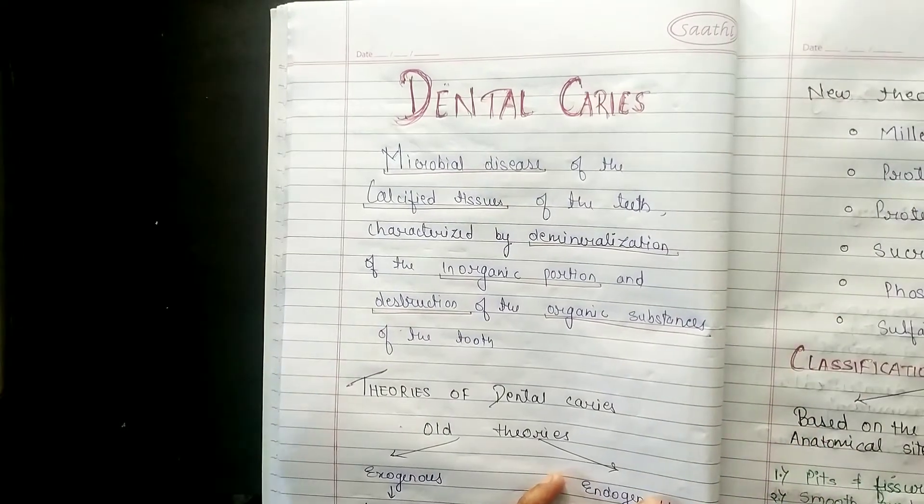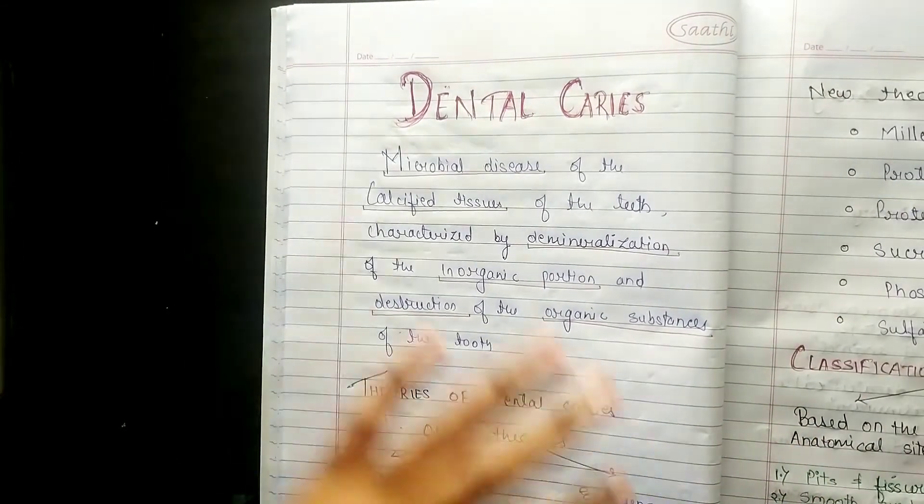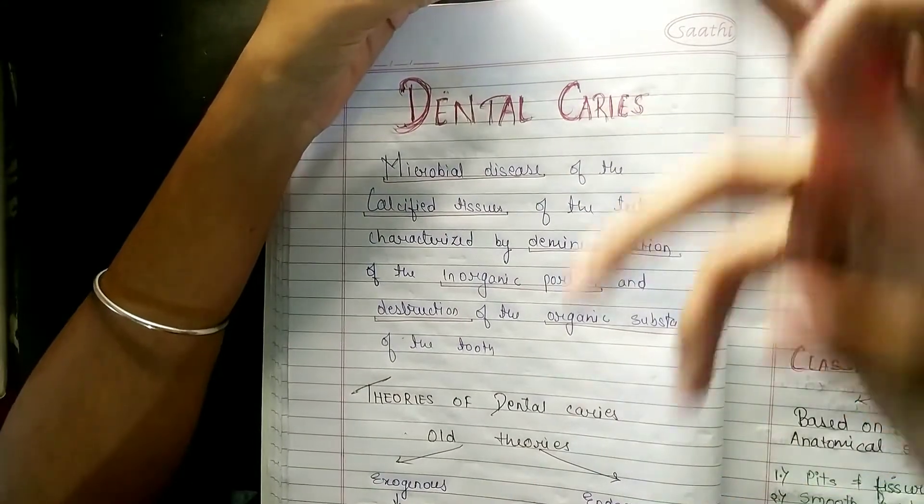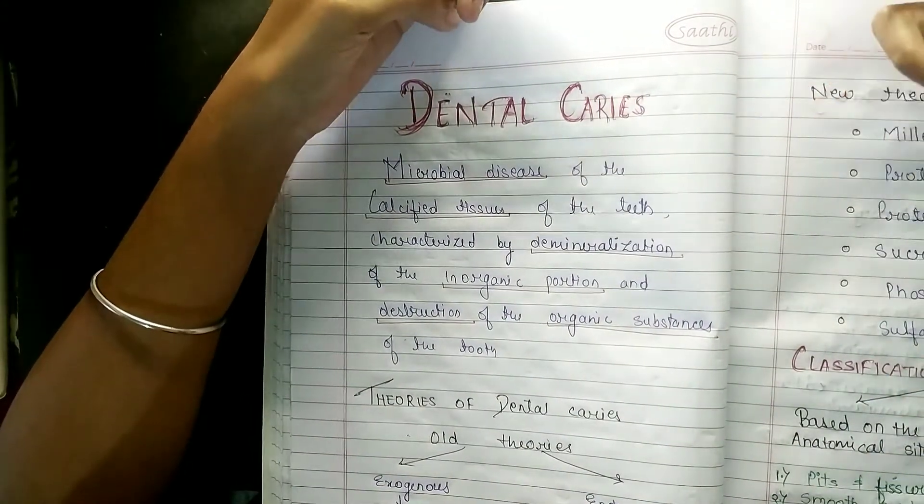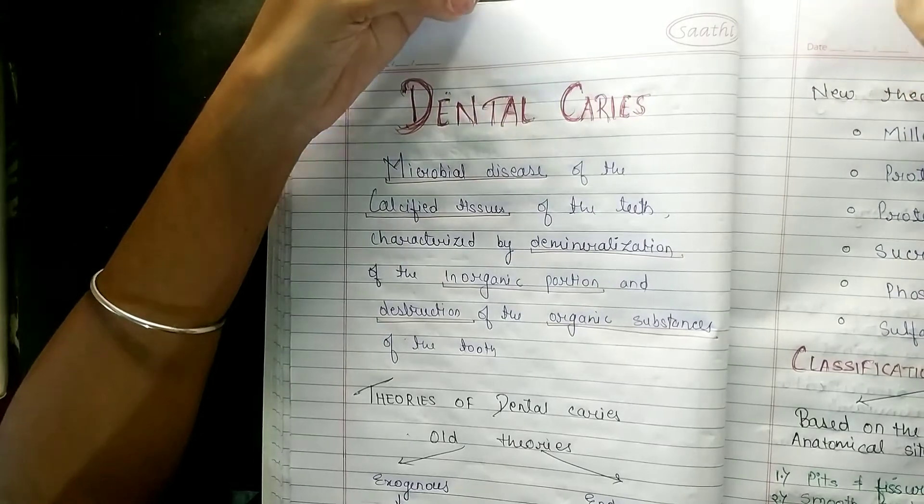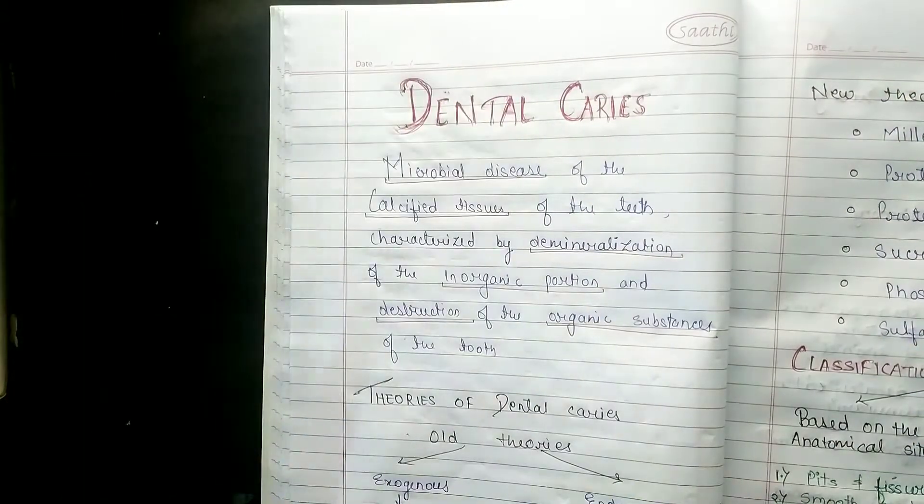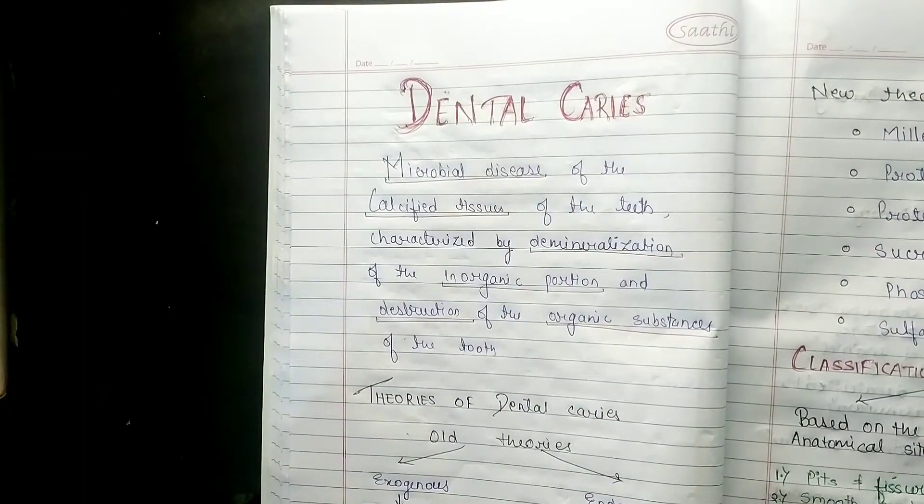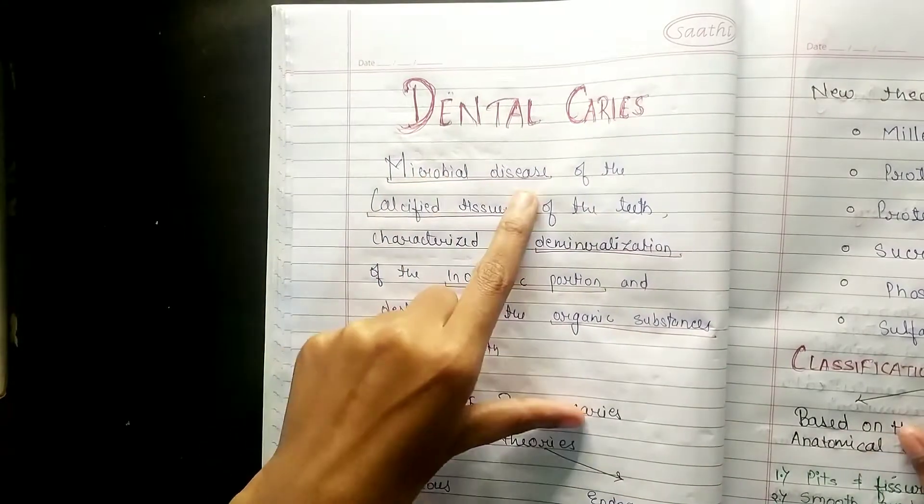Now enough of talking, get back to dental caries. So the definition of dental caries: dental caries, you all know whenever and wherever in a stage of life, caries are going to happen. So this is the definition of the microbial disease. It is a microbial disease, obviously.